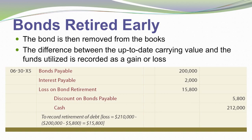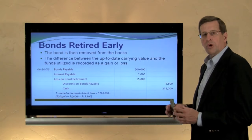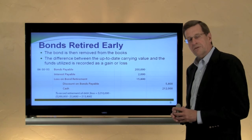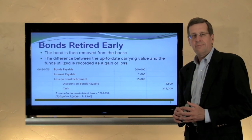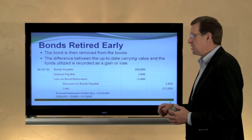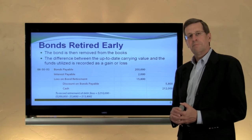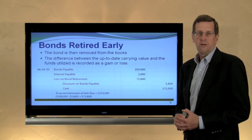That gets the bonds and cash off the books, and relieves the interest payable set up in the previous entry. We're left with a debit balance of $15,800, meaning it took $15,800 more in cash to pay off the debt than its up-to-date carrying value — that's recorded as a loss. Had there been a credit balance, it would have been a gain. This illustration is repeated in the textbook; you may want to go back and tie out the mathematics there, as there are many moving pieces and it helps to work through it with pencil and paper.